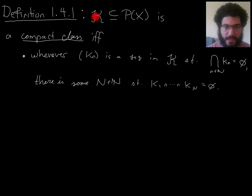In other words, a compact class is a collection of sets that has the property that if you have some at most countable sub-collection with empty intersection, then taking finitely many of them would be enough to get empty intersection.